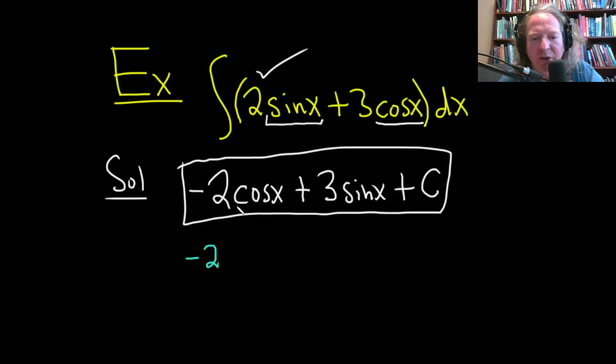The negative 2 hangs out. Derivative of cosine is negative sine. Plus the 3 hangs out. Derivative of sine is cosine. Derivative of C is 0.